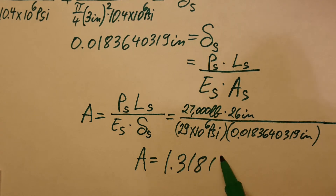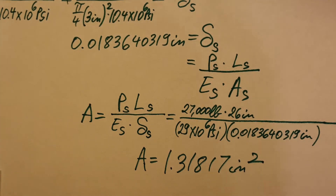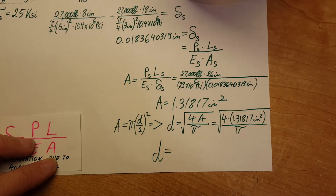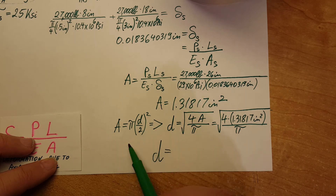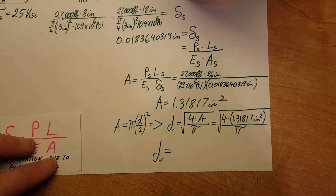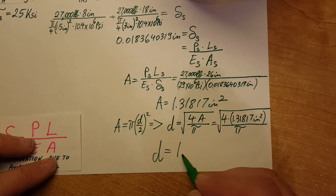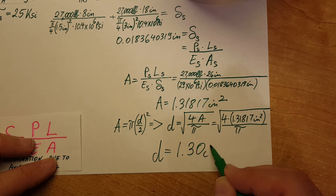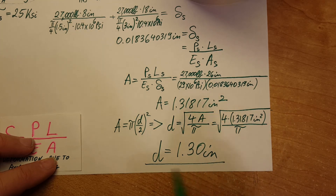Plugging in values and converting to the correct units, we get an area of 1.31817 inches squared. Since they asked for the diameter, not the area, and the rod is circular, the area equals pi times (d/2) squared. Solving for d gives: d equals the square root of 4A over pi. Plugging in values gives a diameter of 1.30 inches.